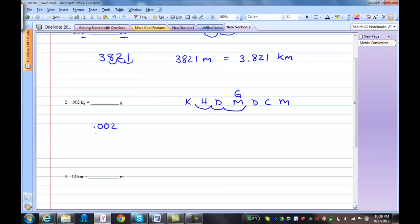Taking the decimal point on my number, I'll move it one, two, three places to the right. So .002 kilograms is equal to two grams.